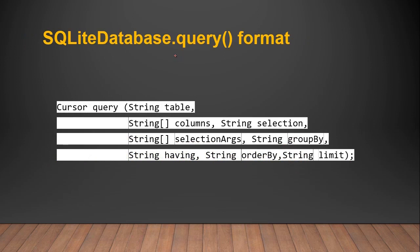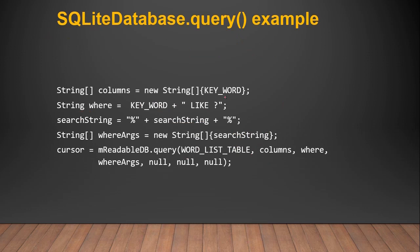Now let's learn how to return data using the query method — the recommended way in Android. The first parameter is the name of your table, the second is an array of column names you want returned. If you want those columns filtered by a selection or WHERE clause, you can use the selection parameter. The selection args are the arguments for that selection. You can also sort using GROUP BY, HAVING, ORDER BY, and LIMIT.